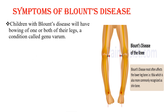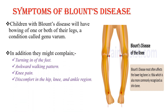Regarding symptoms, children with Blount's disease will have bowing of one or both of their legs, a condition called genu varum. In addition, they might complain of turning of the feet, an awkward walking pattern, knee pain, and discomfort in the hip, knee, and ankle region.